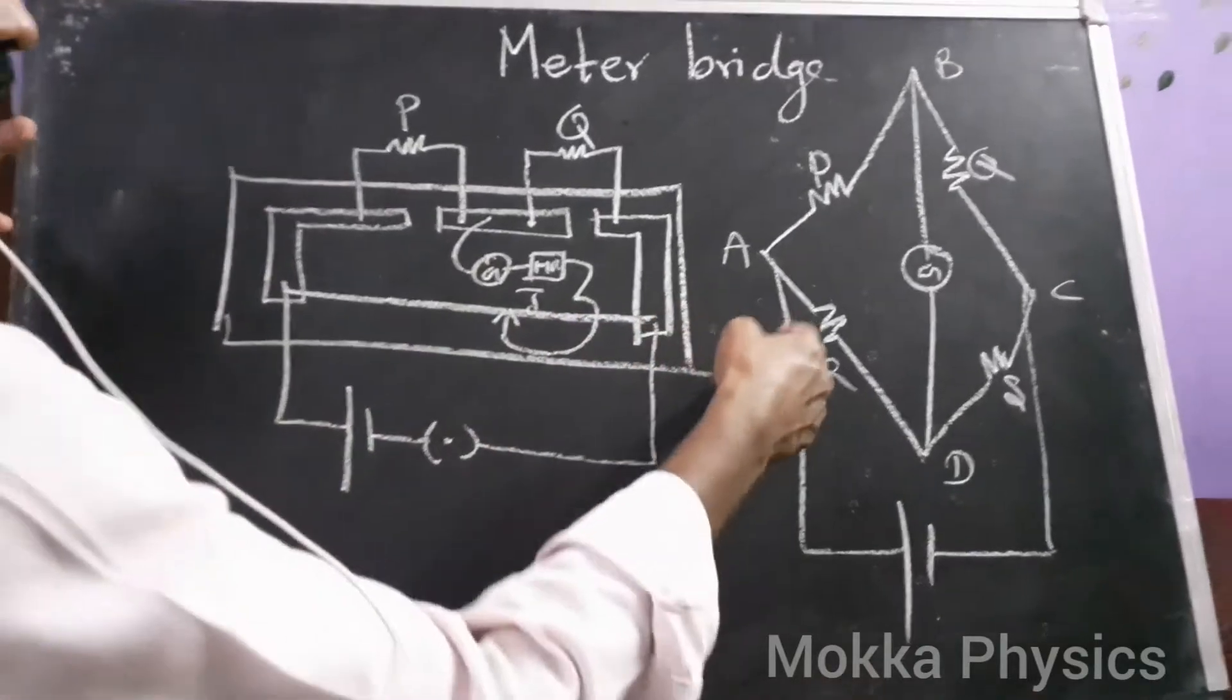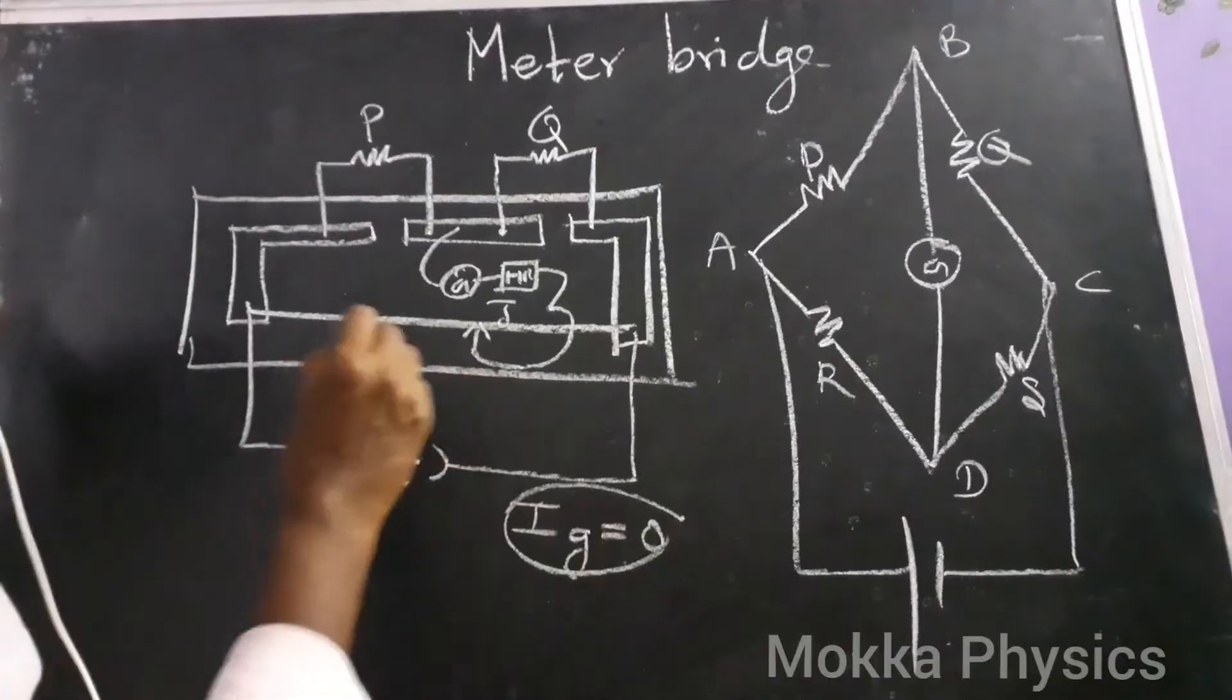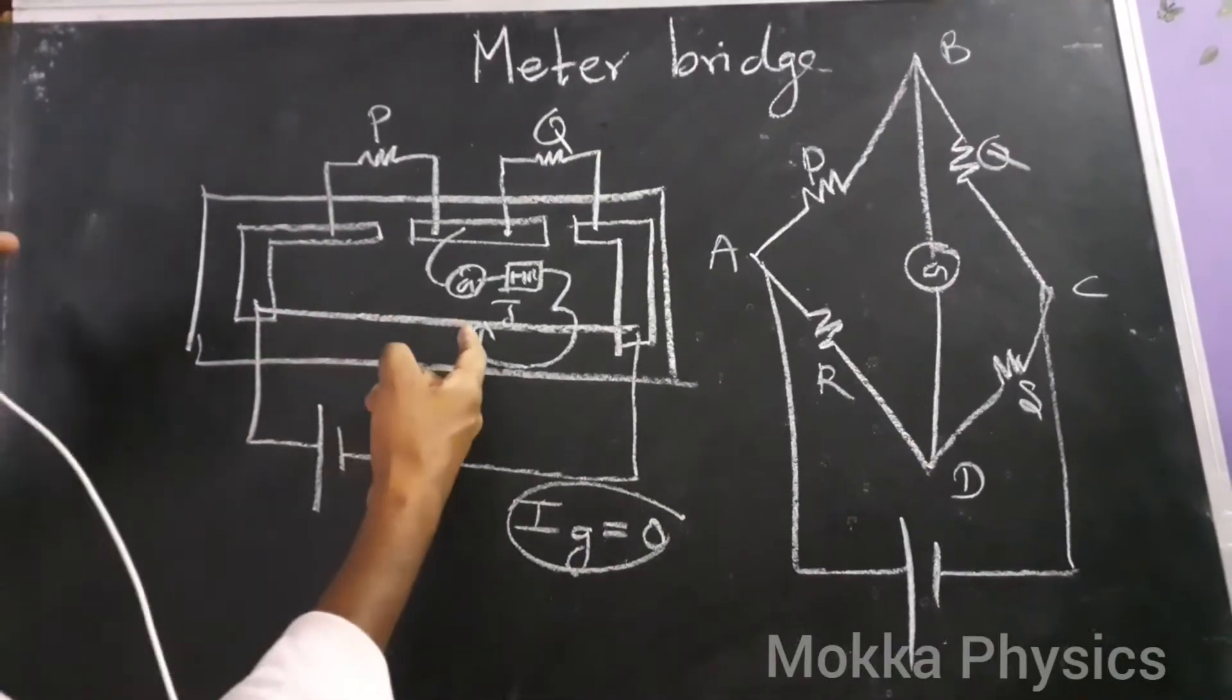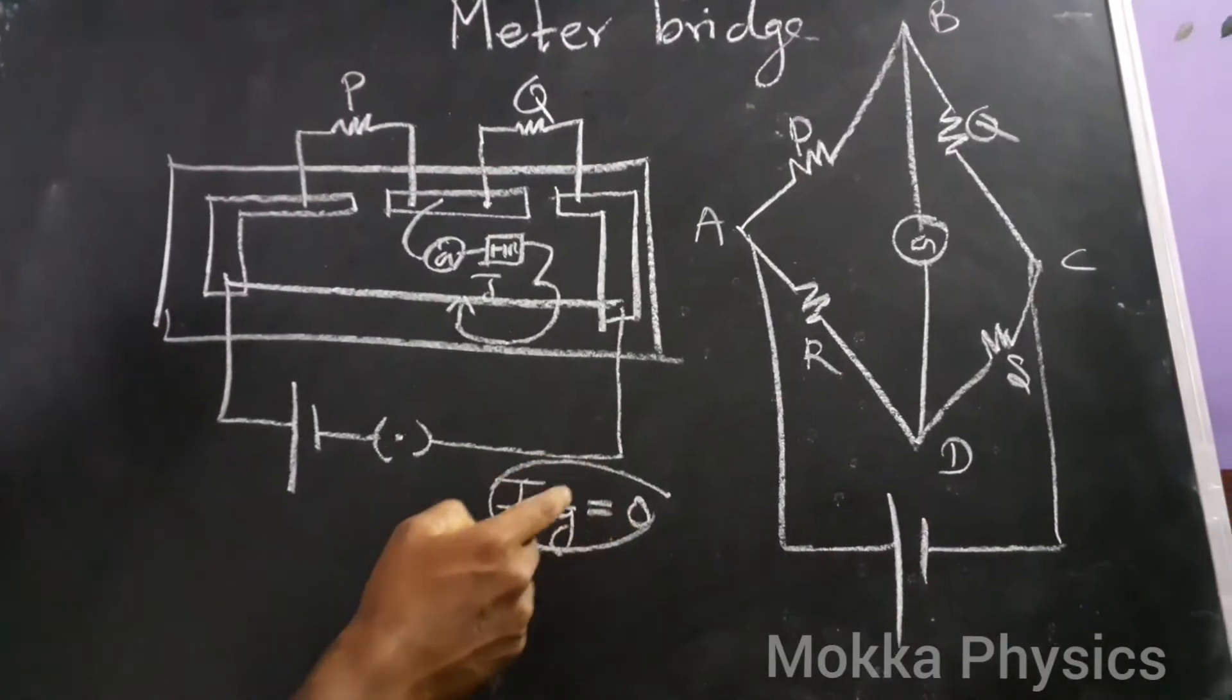What are you doing? Let's try a condition here. Galvanometer, let's move on to the current. By moving the metal jockey at any point, this galvanometer will show a zero deflection. Clear?